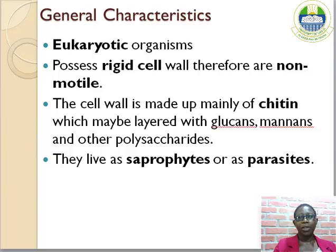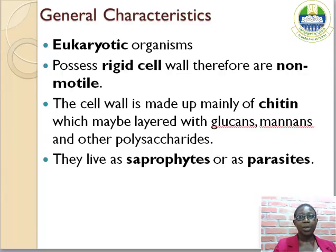Sometimes the cell wall is lined with glucans, mannans, and other forms of polysaccharide. The fungus lives as a saprophyte or as a parasite. As a saprophyte, it lives on the dead remains of organic matter. It can be an obligate parasite — meaning living its entire life cycle as a parasite — or it can be a facultative parasite, an organism that spends part of its life cycle as a saprophyte.